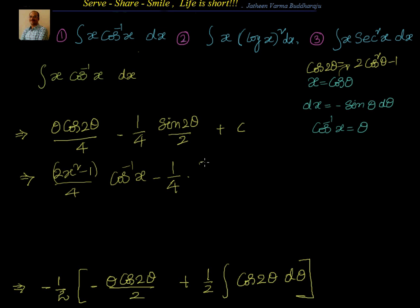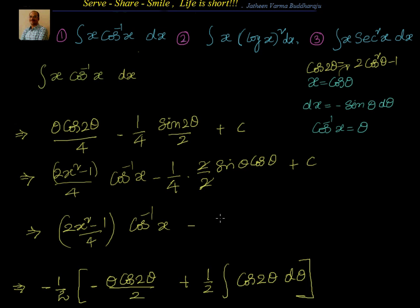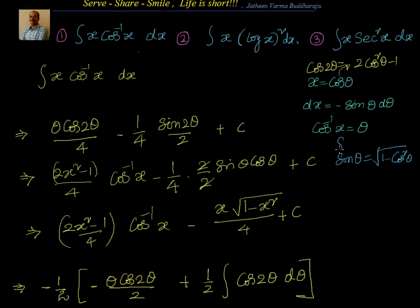The 2s cancel, giving −(1/4)·sin θ·cos θ. Since cos θ = x, sin θ = √(1 − cos²θ) = √(1 − x²), because sin²θ + cos²θ = 1. So the final answer is (2x² − 1)/4 · cos⁻¹x − x√(1 − x²)/4 + C.